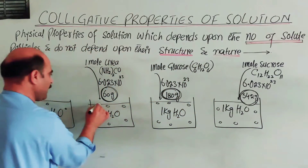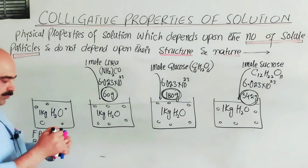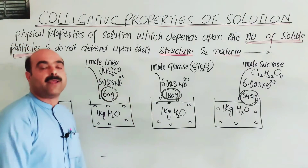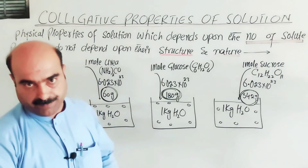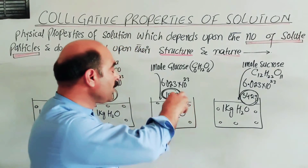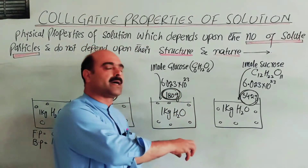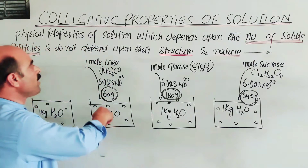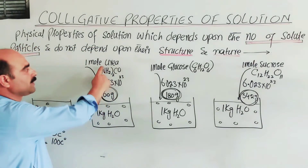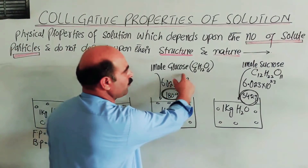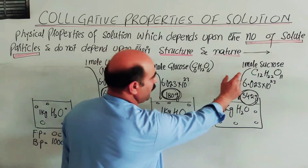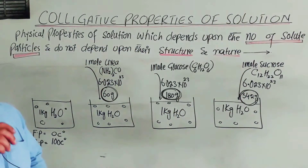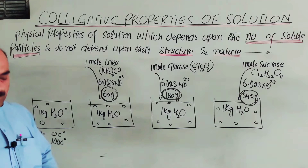When one mole of solute is dissolved in 1 kg of solvent, we get a solution. This gives us a dilute solution. So we have: one mole of urea in 1 kg solvent, one mole of glucose in 1 kg solvent, and one mole of sucrose in 1 kg solvent. These are all one-molal dilute solutions being compared.